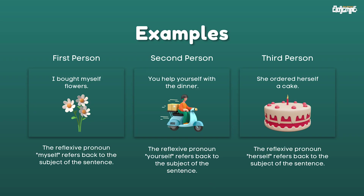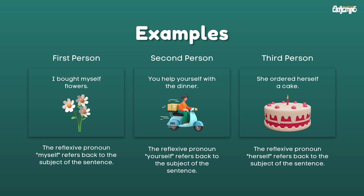The first person pronoun serves as the subject. Second person example: You treated yourself with the dinner. Here 'yourself' is the second person reflexive pronoun. For the third person: She ordered herself a cake, where 'herself' is the reflexive pronoun.